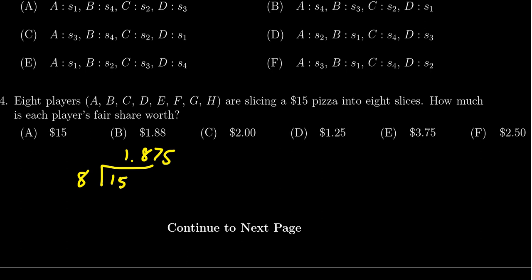But you get 1.875 rounded to the nearest penny. That would actually make choice B be the fair share. A fair share would be approximately $1.88.